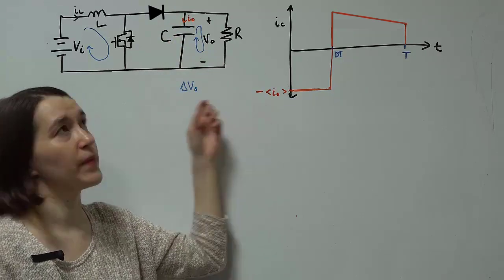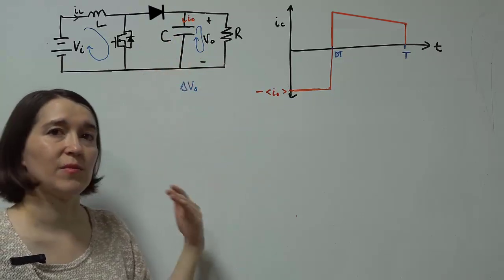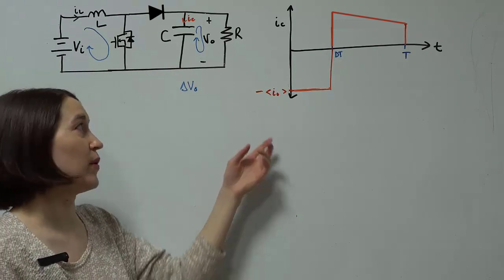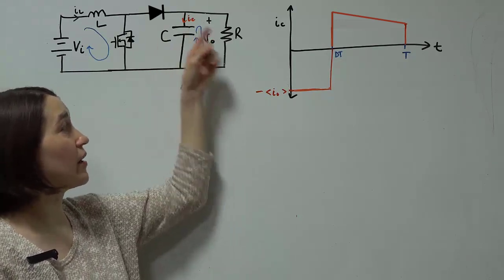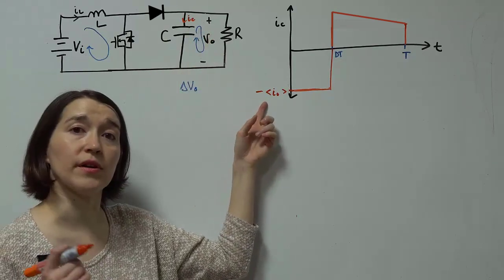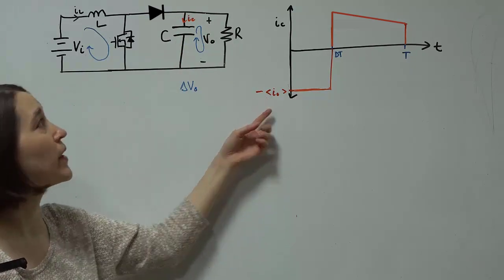So we actually have a negative value. And we know that the output current has to be maintained at whatever the average value is. So actually that current is going to be the average output current here at this level.